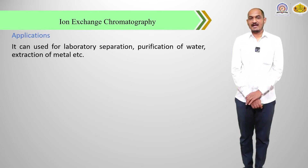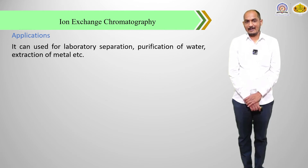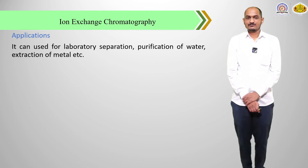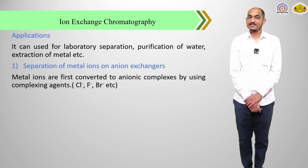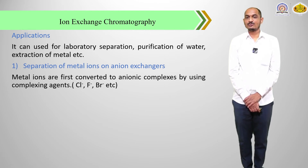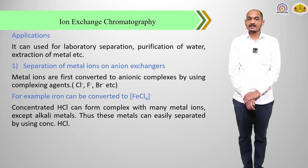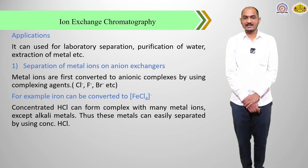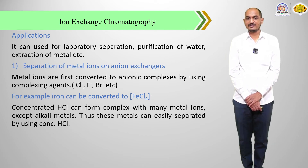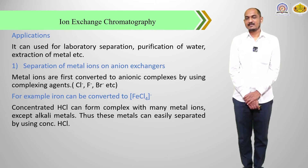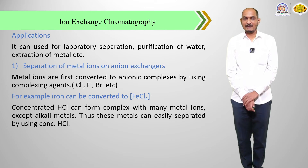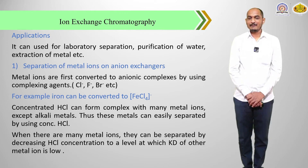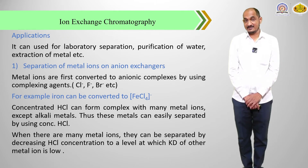The application of ion exchange chromatography includes laboratory separations, purification of water, and extraction of metals. For separation of metal ions on anion exchangers, metal ions are first converted to anionic complexes using complexing agents. For example, iron can be converted to a complex in the form of FeCl₄⁻. Concentrated HCl can form complexes with many metal ions except alkali metals, and thus these metals can be easily separated. When there are many metal ions, they can be separated by decreasing HCl concentrations to the level at which the affinity of the other metal ion is low.